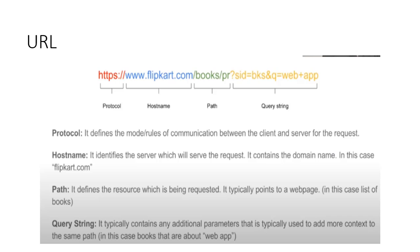A URL has four different components: the first is the protocol, the second is the hostname, the third is the path, and the fourth is the query string. The protocol is a set of rules used to communicate between electronic devices — it defines the rules of communication between client and server for the request. The hostname identifies the server to which you want to send the request.